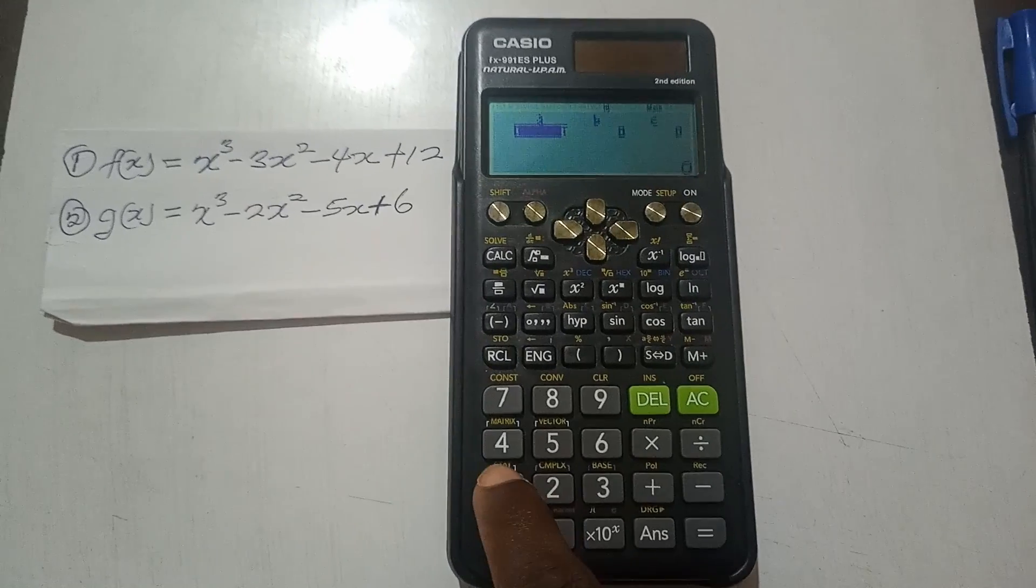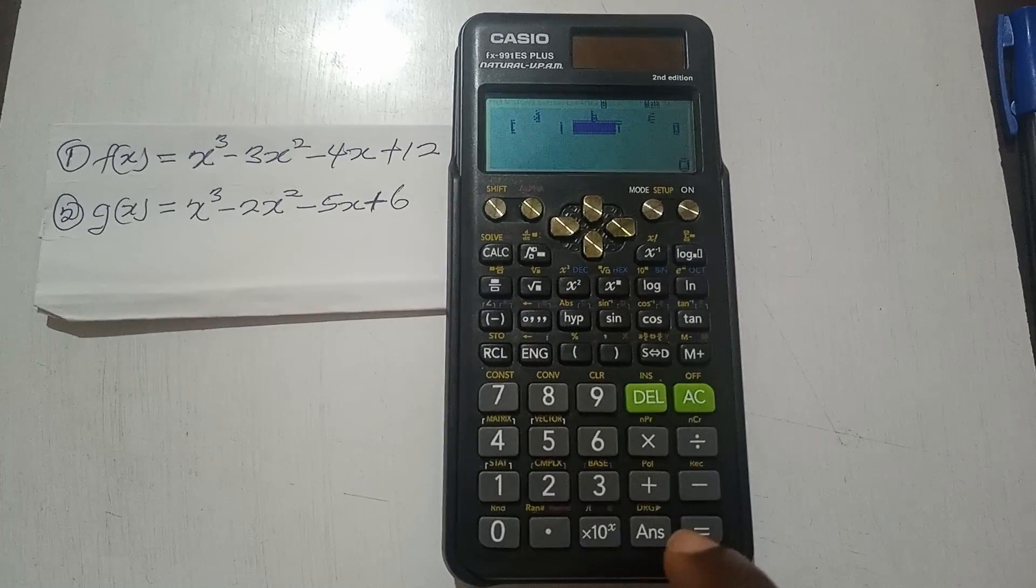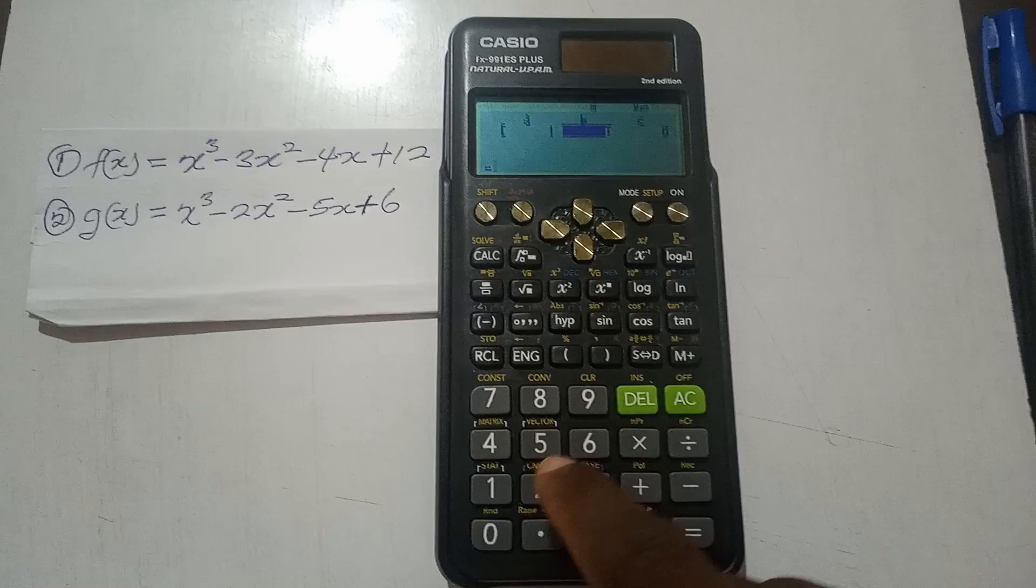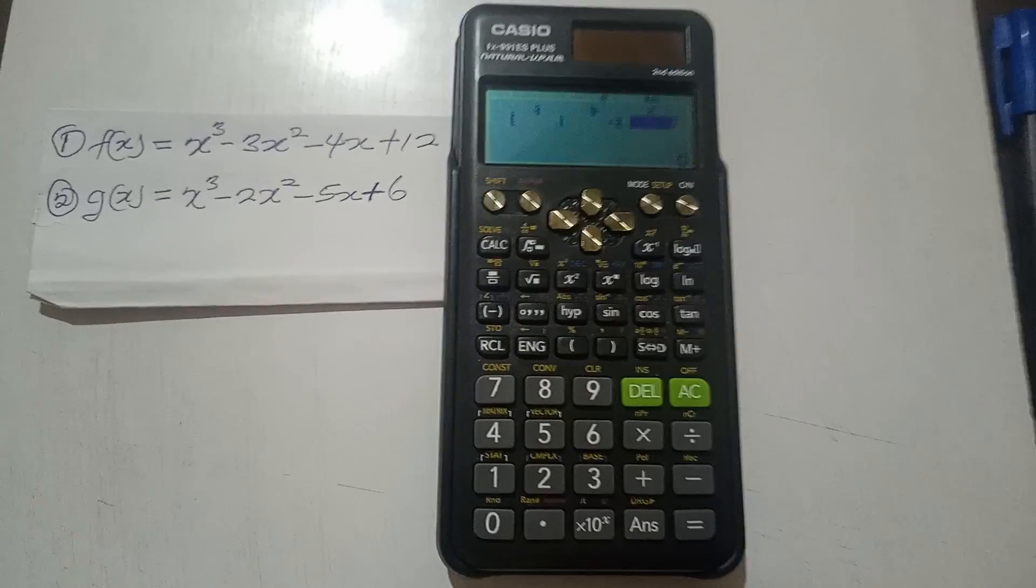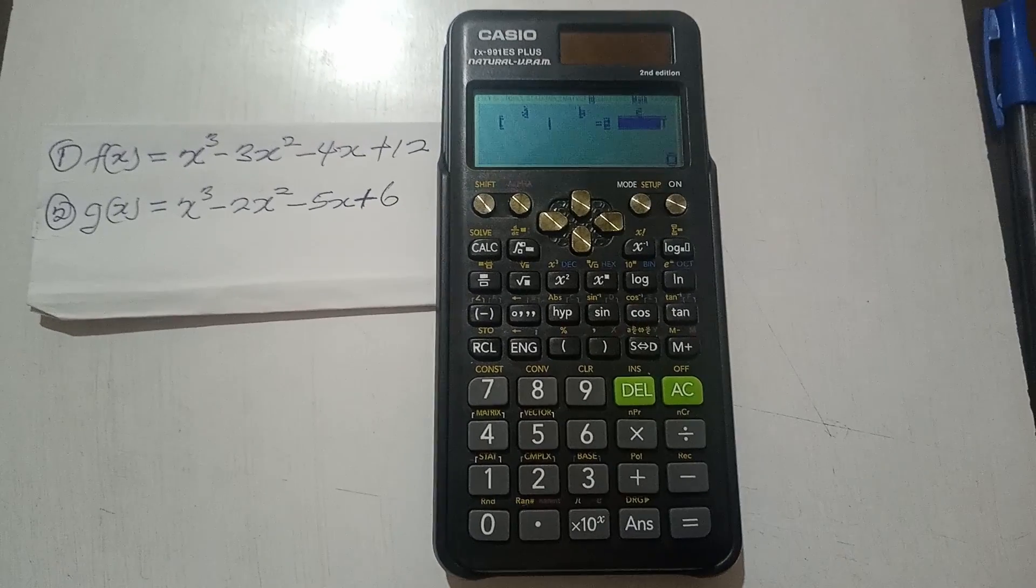So I'm sure you entered 1 for a, negative 2 for b, and you press equal to for each of them so that the cursor will move to the next column.